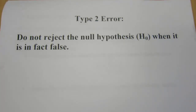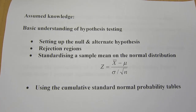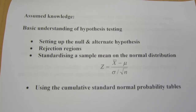Welcome to QuantConcepts. In this tutorial, I'll demonstrate how to calculate the probability of a type 2 error in a hypothesis testing question. As a recap, a type 2 error occurs when we do not reject the null hypothesis when it's in fact false. This lecture is a little more advanced, as there is some assumed knowledge required, including a basic understanding of hypothesis testing, setting up null and alternate hypotheses, rejection regions, standardizing a sample mean, and using the cumulative standard normal probability table.